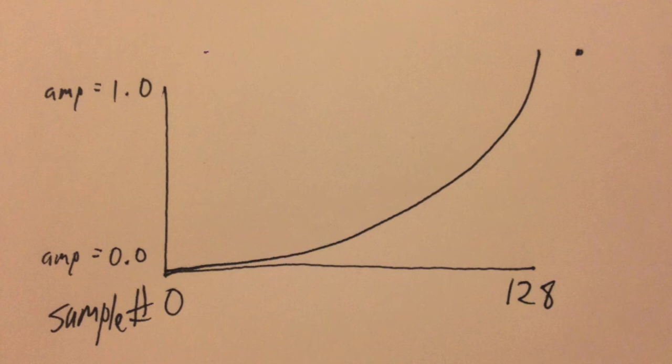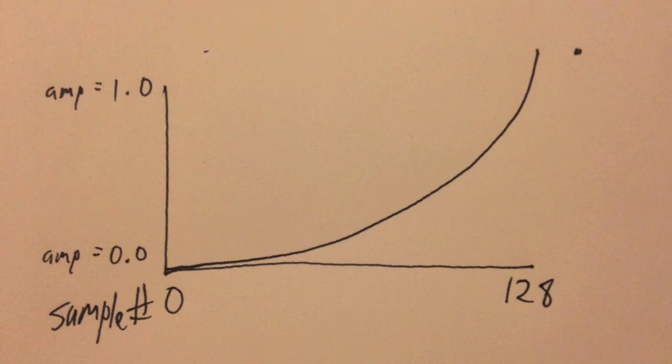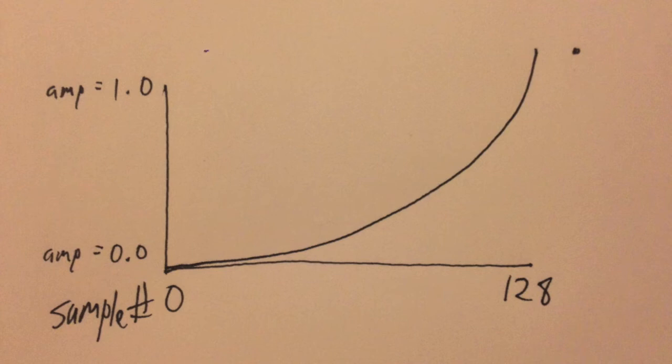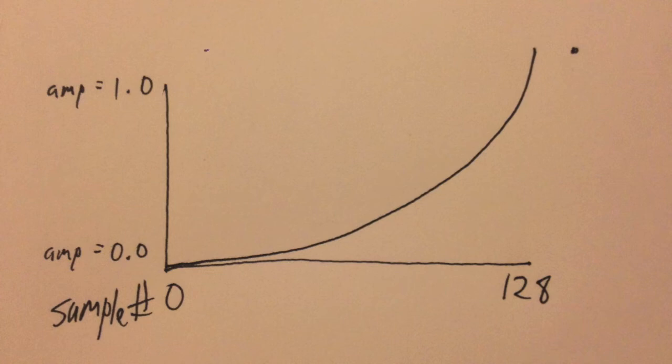Okay. So we've got our lookup table that you're looking at here, where on the left side is sample number zero. On the right side is however big you want the table to be. So in this case, it would be 128 samples. It's kind of a convenient size, the power of two. And you can see that there's an exponential rise from zero to one in this.